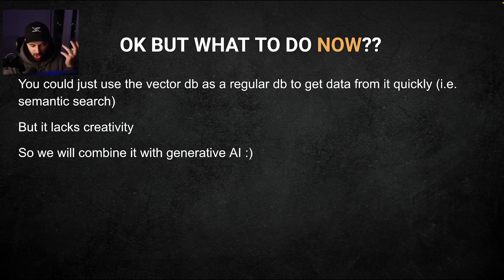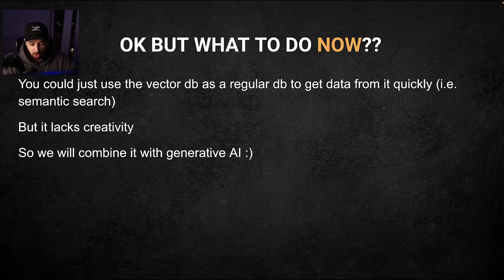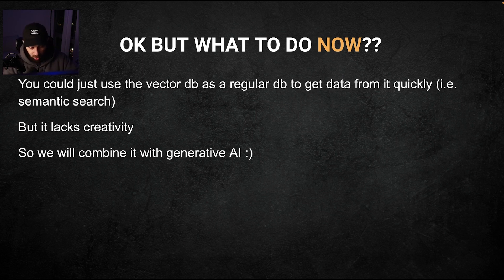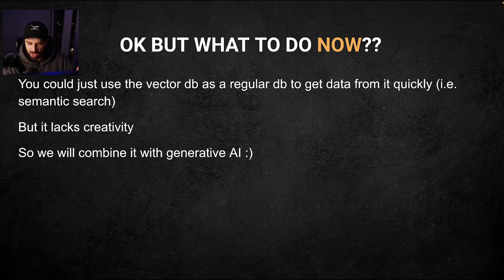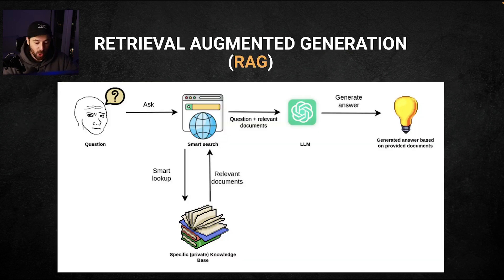So now you have a database of vectors and embeddings — why do you do this? Well, you could use it as a regular database to just retrieve data, but that wouldn't be as interesting. What we want to do is actually use this data and empower it by combining it with generative AI to create new things and make it more creative. That's the whole philosophy behind Retrieval Augmented Generation, also known as RAG.